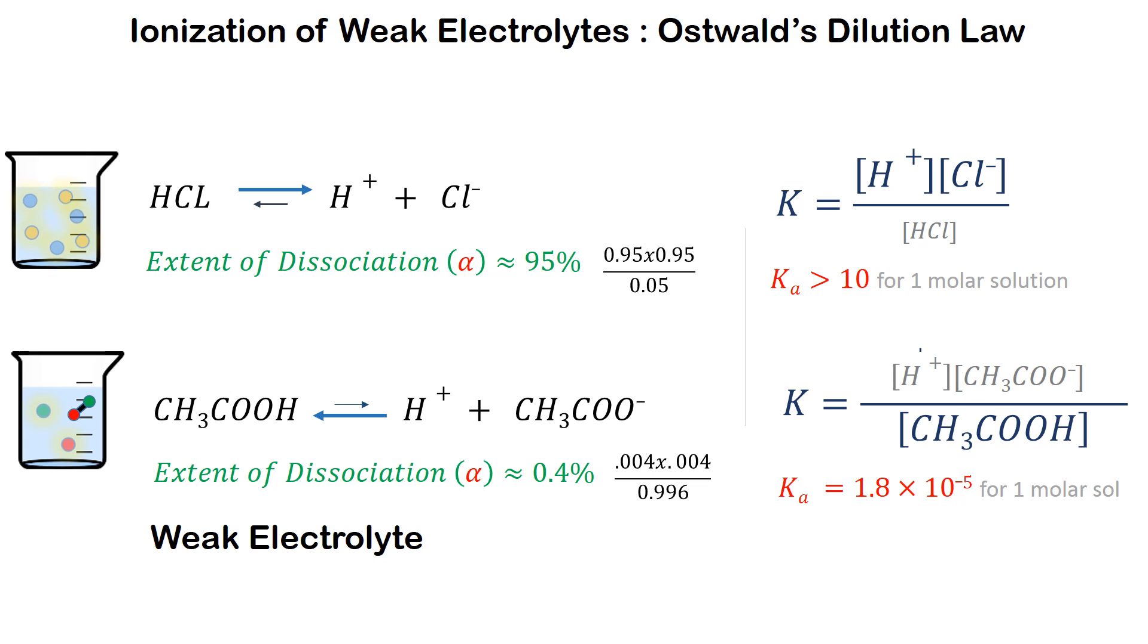On the other hand, when we put one mole of acetic acid in water, we get only 0.004 moles of H plus ions and 0.004 moles of CH3COO minus ions. Bulk of the acetic acid, which is 0.996 moles, remains undissociated. Therefore we get a very small value of Ka for acetic acid, and acetic acid is a weak electrolyte.